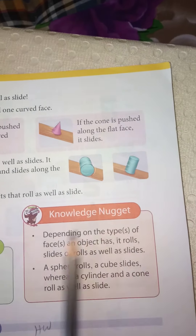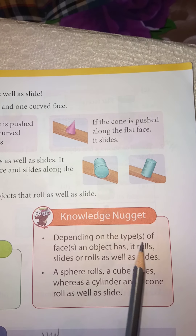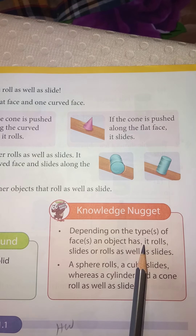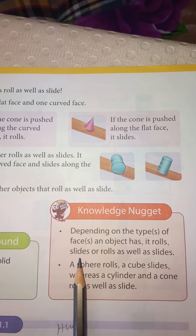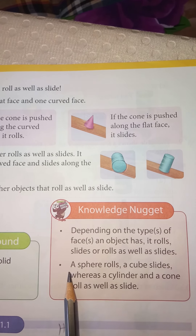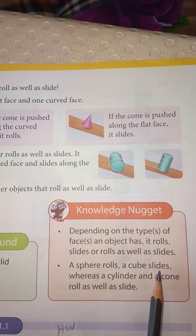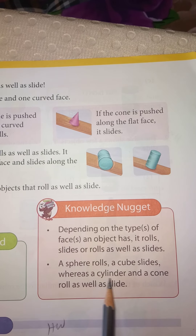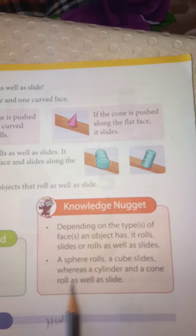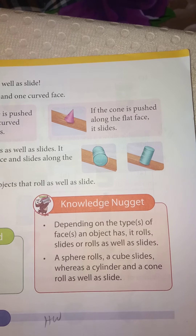Knowledge nuggets: depending on the types of faces an object has, it rolls, slides, or rolls as well as slides. A sphere rolls, a cube slides, whereas a cylinder and a cone roll as well as slide.